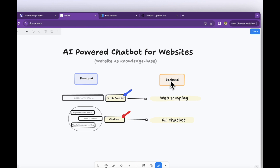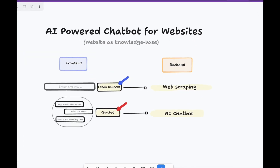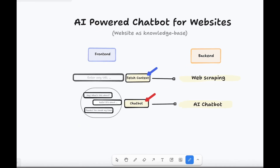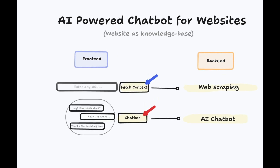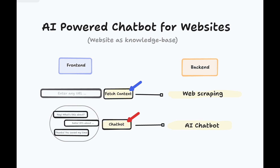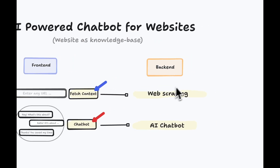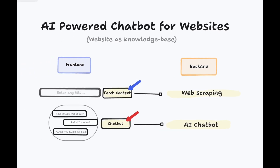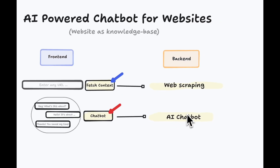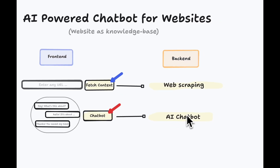We already have a plan: it's an AI-powered chatbot for websites. In the back end I've decided we will have web scraping to extract the whole content from any URL, have a large language model-powered chatbot which will take the content from the scraped URL and also our prompt, and pass it to the large language model which will generate responses. The front end will have a text input box for any URL, and when a fetch context button is pressed the web scraping endpoint gets triggered. Then we'll have a chatbot where we do the whole conversation with that content. We need two back-end endpoints and a very simple UI.